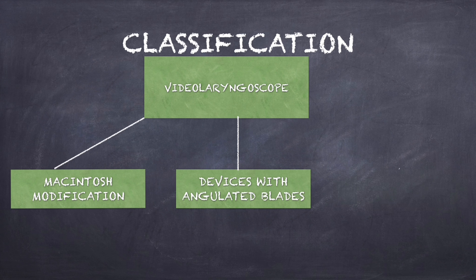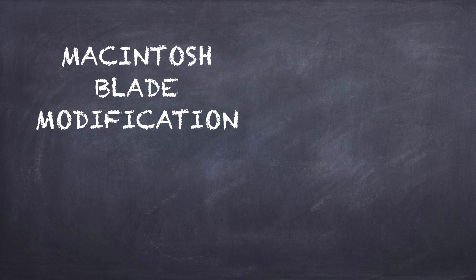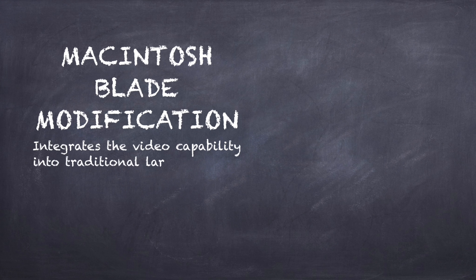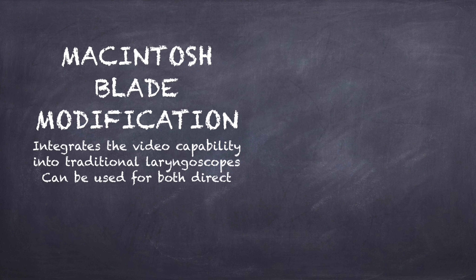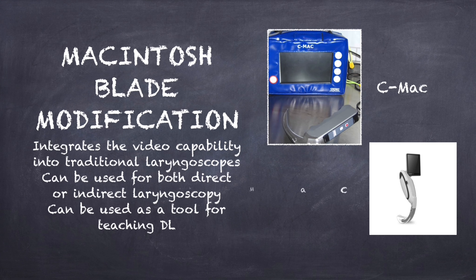Blades can be Macintosh blade modifications, angulated blades, or blades with tube or guide channels. Macintosh modification blades integrate video capability into the traditional Macintosh blade and can be used for both direct or indirect laryngoscopy. These can also be used as a teaching tool for airway anatomy. Examples include C-MAC, V-MAC, and McGrath MAC.